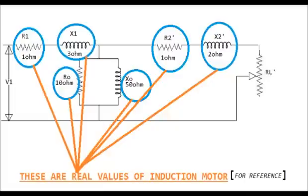These are the real values of resistances and inductances of an induction motor. R1 is 1 ohm, X1 is 3 ohm, R0 is 10 ohm, X0 is 50 ohm, R2 dash is 1 ohm and X2 dash is 2 ohm. RL dash is load resistance.